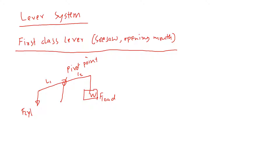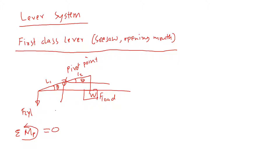The cylinder is pushing down — F cylinder — and this length is L1, this length is L2, and the system is at an angle theta. We can develop a formula for this lever system by taking the moment with respect to the pivot point. Setting the sum of moments equal to zero, F cylinder creates a clockwise moment, and the shortest distance from the pivot is L1 cosine theta.